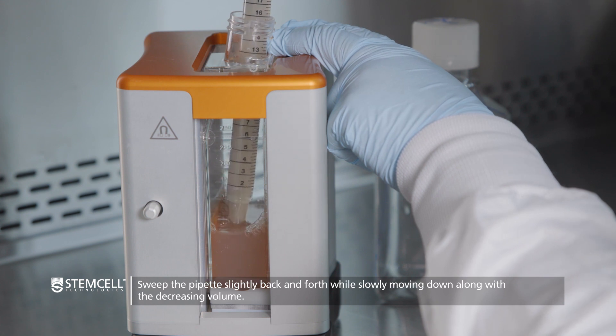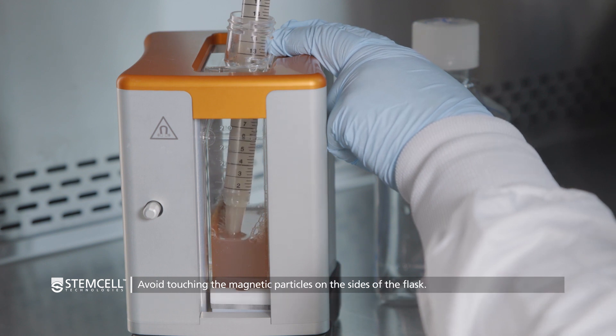Sweep the pipette slightly back and forth inside the flask while slowly moving down with the decreasing volume of the supernatant. Take care to avoid touching the magnetic particles on the sides of the flask.